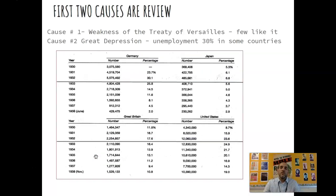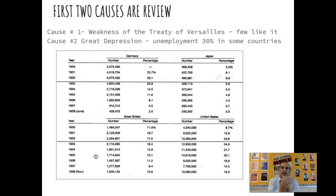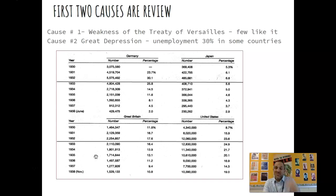These first two causes are really a review of stuff we talked about in 7.5, which was totalitarianism and issues economically around the world.